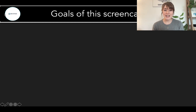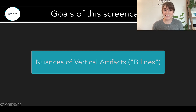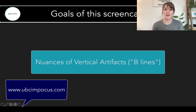Our goal for this screencast is to delve into those vertical artifacts or B-lines. We're going to talk about interstitial syndromes and how some of the nuances of lung ultrasound can help us tease out that differential. What we are not going to talk about is lung ultrasound image acquisition technique — for more information on that, check out the lung ultrasound image acquisition screencast on the UBCIM POCUS site.